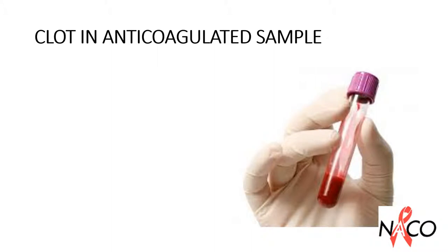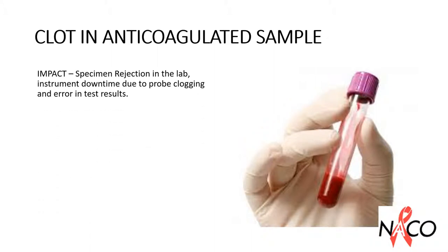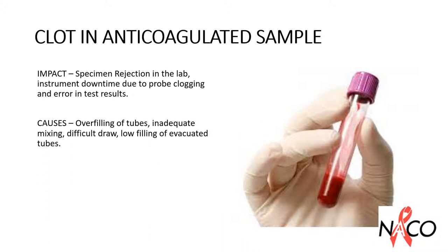Clots in an anticoagulated sample may impact the processing of the sample by causing its rejection, instrument downtime due to probe clogging, and errors in test results. The causes of clots in anticoagulated samples are: overfilling of tubes, inadequate mixing, difficult draw, and low filling of evacuated tubes.